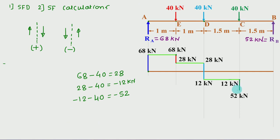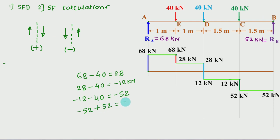From C to B there is no load, so SFD is parallel to the x-axis. At point B, the reaction RB is upward — minus 52 plus 52 = 0. The diagram returns to zero. Above the baseline is positive, below the baseline is negative. This completes the Shear Force Diagram.